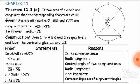Moving towards the construction: in order to make it easier to prove, we join O to A, B, C, and D — that means joining all four endpoints of the two chords to the center O, forming two triangles.